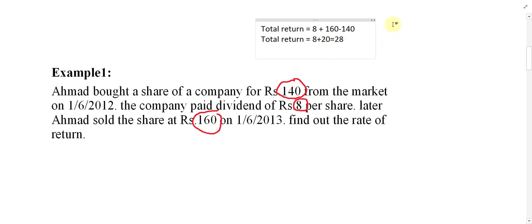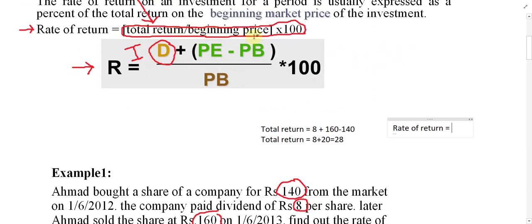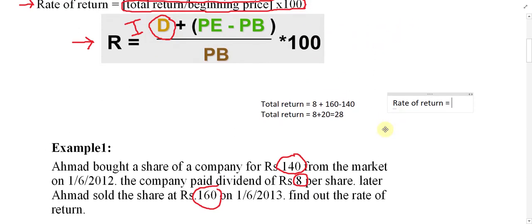Now calculate the rate of return using the formula: total return divided by beginning price, multiplied by 100. The beginning price was 140. So rate of return equals total return divided by 140, multiplied by 100.